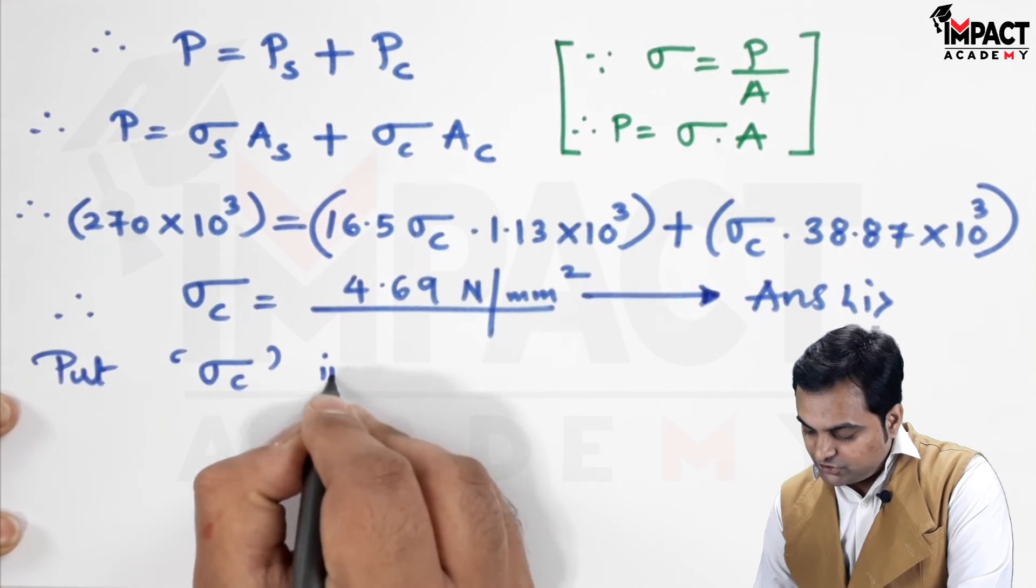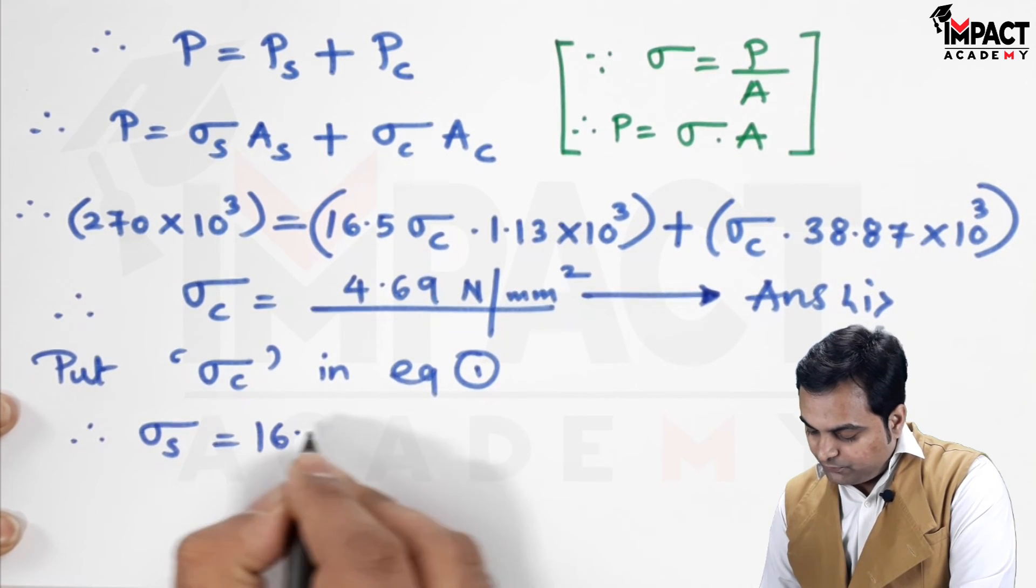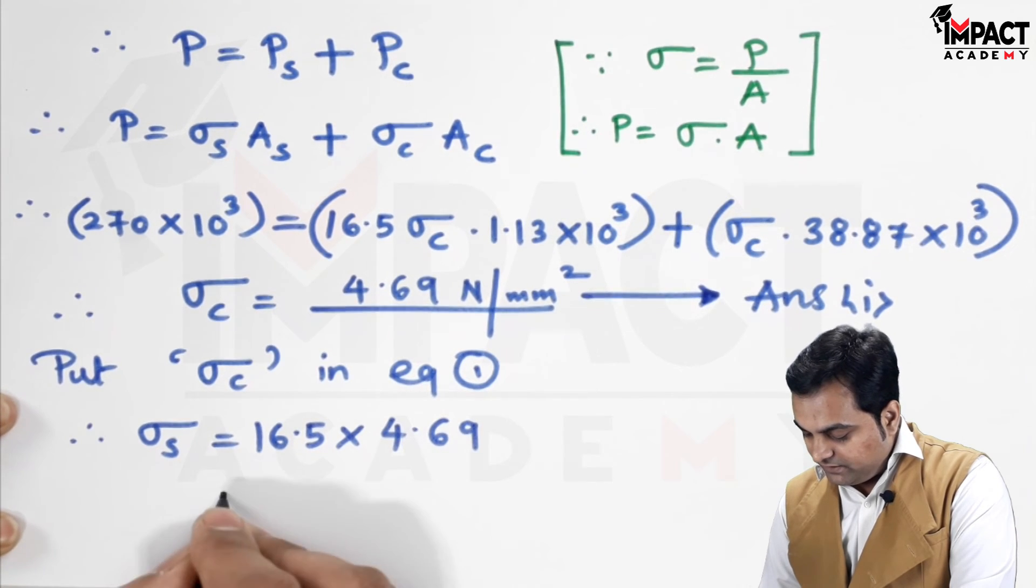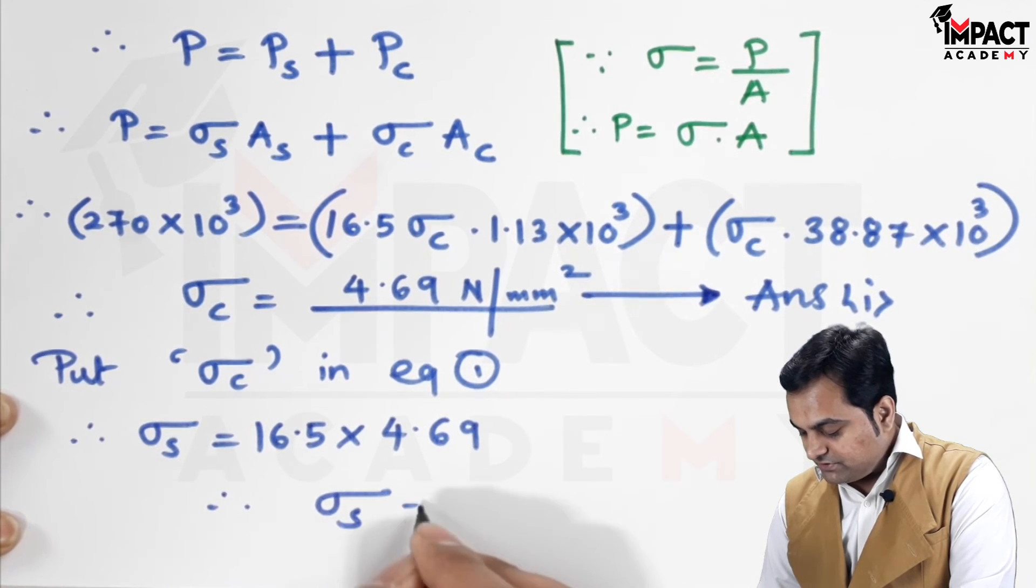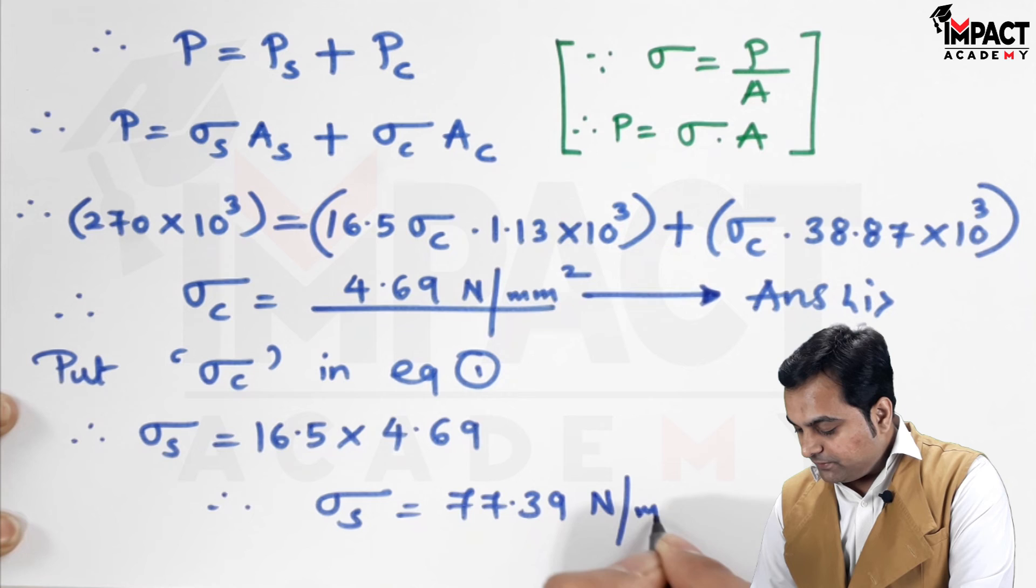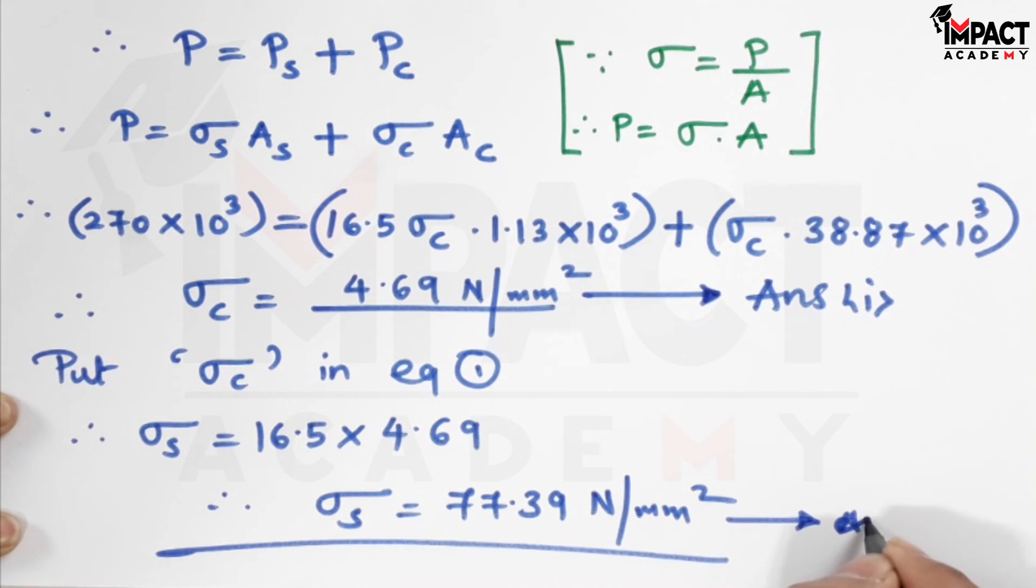Now, I will put this value in equation 1, where we have sigma S as 16.5 times of sigma C, which is 4.69. And, from this, the stress in steel comes out to be 77.39 Newton per mm square. That is the second answer.